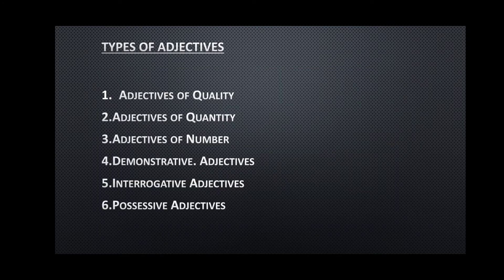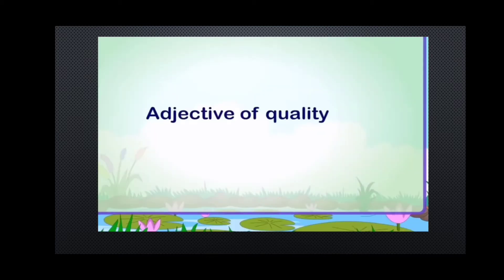Basically, there are six types of adjectives. They are: adjective of quality, adjective of quantity, adjective of number, demonstrative adjective, interrogative adjective, and possessive adjective. In this session, we will cover three adjectives — that is, adjective of quality, quantity, and number.